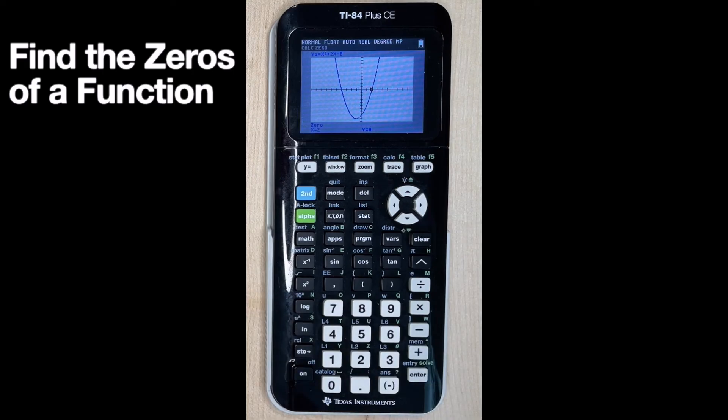So that's how you find the zero or the intercepts on the TI-84 plus CE graphing calculator.